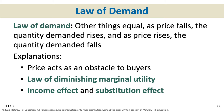The substitution effect says: if the price of this good is coming down, I'll buy more of this one instead of what would now be a more expensive substitute. Maybe I was buying beef before, but I really wanted chicken. If the price of chicken comes down, I could buy more chicken instead of beef. So when the price of one good comes down, we'll substitute into buying more of that good.